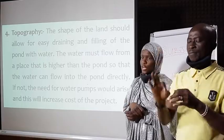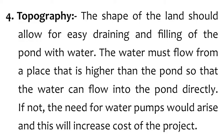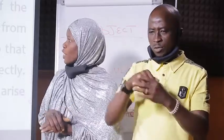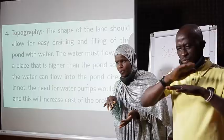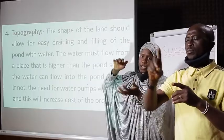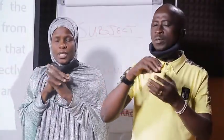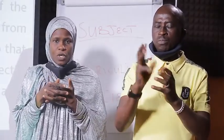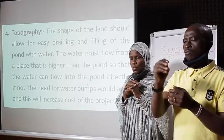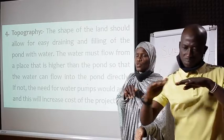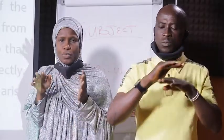Number three, vegetation of the area — low vegetation, especially grassland, is preferred. Woody sites are not suitable because clearing and stumping will greatly increase the cost of setting up the fish pond. Number four, topography — the shape of the land should allow for easy draining and filling of the pond with water. The water must flow from a place higher than the pond so it can flow in directly. If not, the need for a water pump will arise and increase the cost of the project. You should look for an area at a lower level so water flows in and out easily without needing a pump.